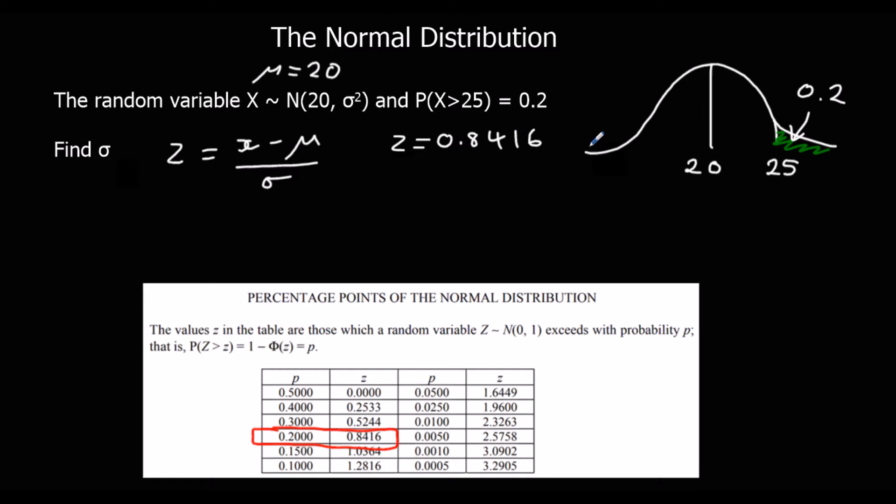So we can look up the probability and find the standardized score. Then we're going to substitute into the formula. So 0.8416 equals x, which is 25, minus the mean, which is 20, over the standard deviation, which is what we're working out. So we've got 0.8416 equals 5 over the standard deviation.